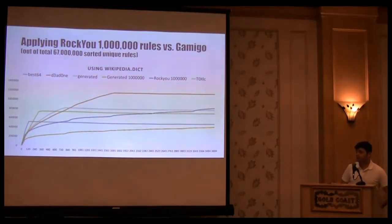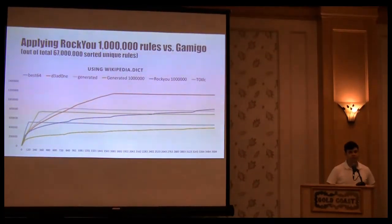The efficiency of rules are highly dependent on the word lists they use. Before, I used example dict from OCL Hashcat distribution. If you use something like a Wikipedia dictionary, d3ad0ne's rule list actually leaves the crap out of 1 million. So good job on that one.